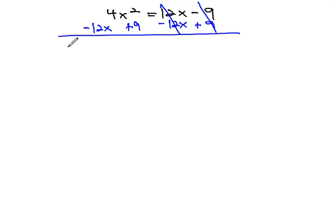Making sure our exponents are in descending order, we have 4x squared minus 12x plus 9 equals 0.